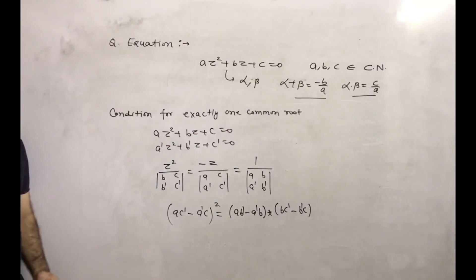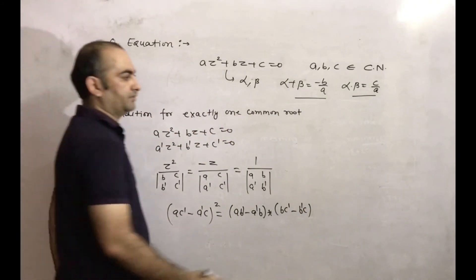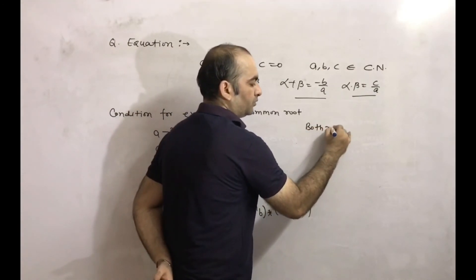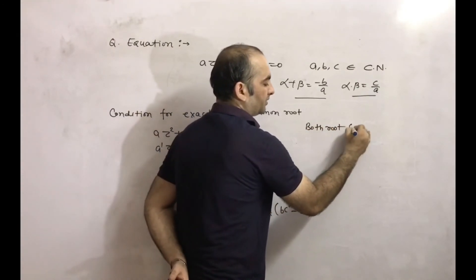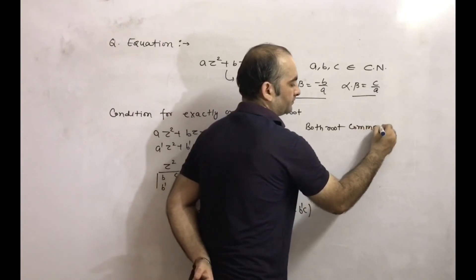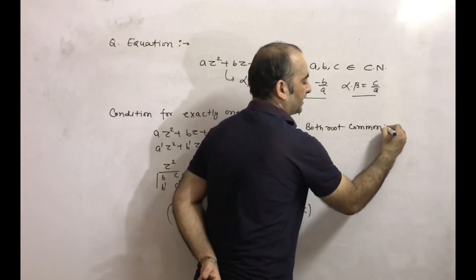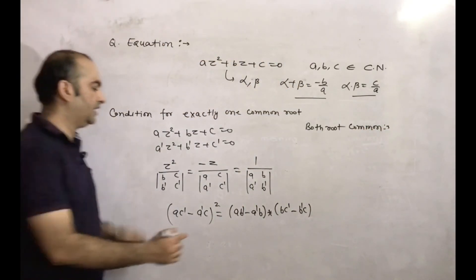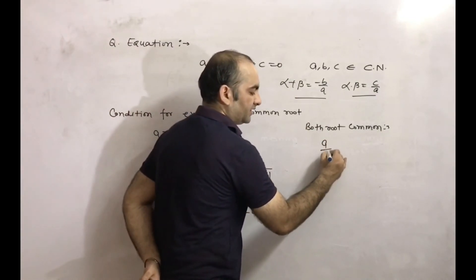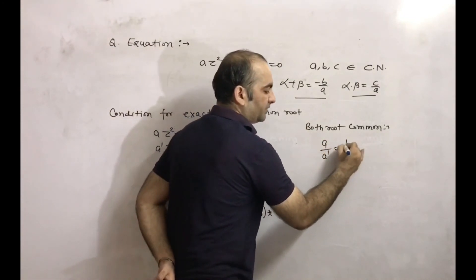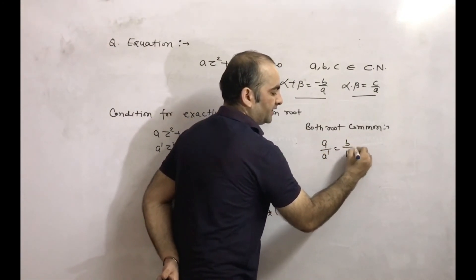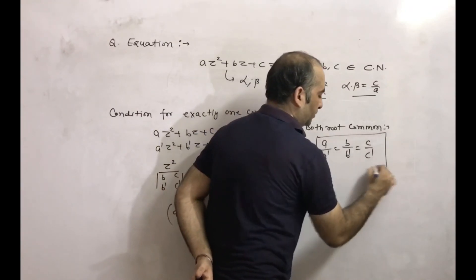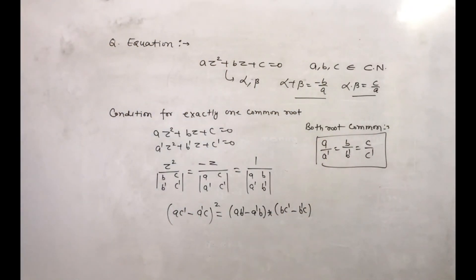If both roots are common, that means the two equations must be identical. The condition is: a/a' = b/b' = c/c'. This is the condition when both roots are the same for both equations.